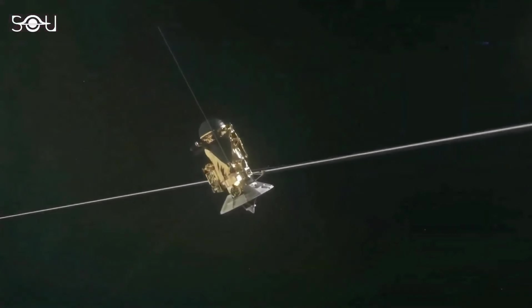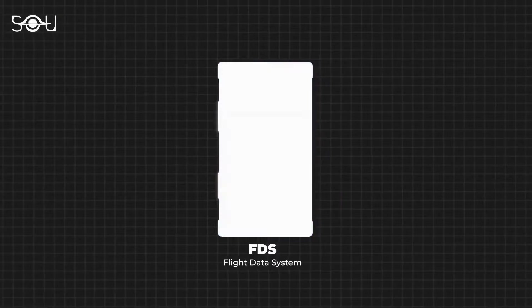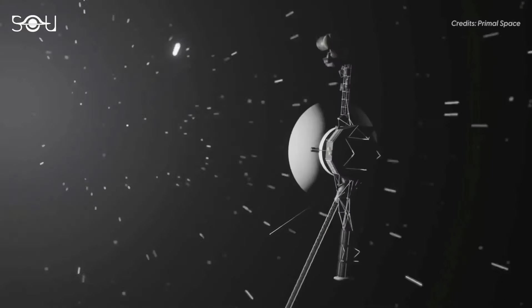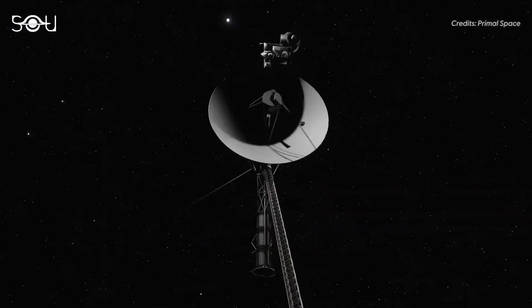The Voyager spacecraft captured more than 33,000 images of Jupiter and its satellites in total. Every photograph seemed to reveal something new.